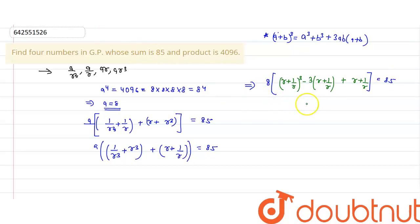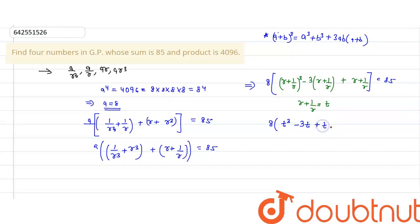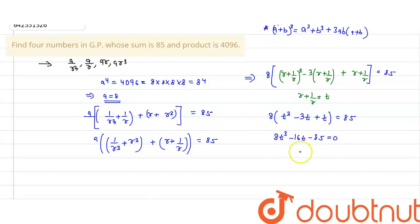Now I am putting r + 1/r equal to t. So we get 8(t³ − 3t + t) equals 85, which simplifies to 8t³ − 16t = 85, giving 8t³ − 16t − 85 = 0. Now substituting 2t = y, this becomes y³ − 8y − 85 = 0.